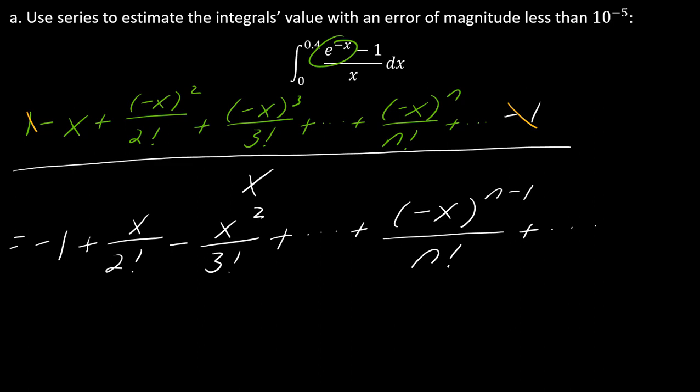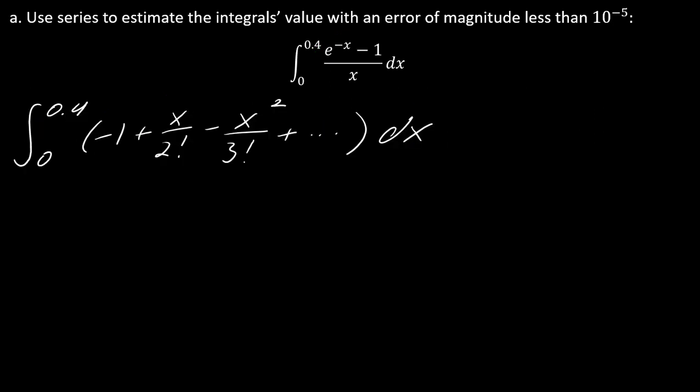I see a pattern emerging here, so I feel pretty comfortable writing this out as negative x to the n minus 1 over n factorial. The next thing that I want to do is, we are integrating. I'm going to set up my integral, but now I'm going to use this as the integral.